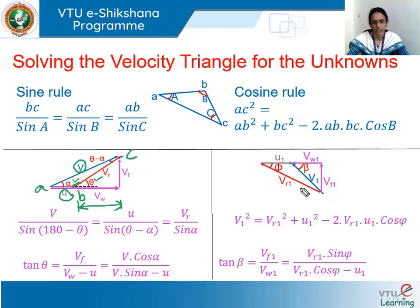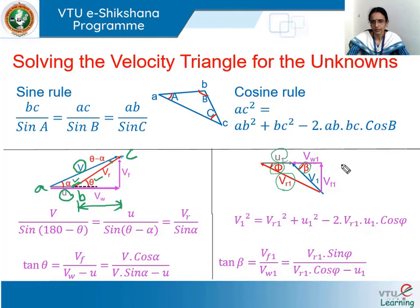For the outlet velocity triangle, if vr1, u1, and the vane angle phi are known, we can apply the cosine rule: v1² = vr1² + u1² − 2·vr1·u1·cos(phi). To find vw1 and vf1: tan(beta) = vf1/vw1, where vf1 = vr1·sin(phi) and vw1 = vr1·cos(phi) − u1. These are the typical methods used in numerical examples.